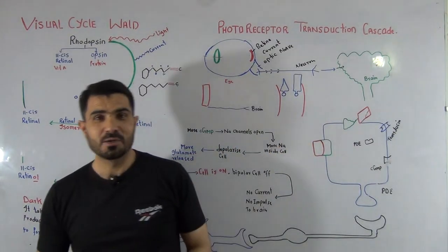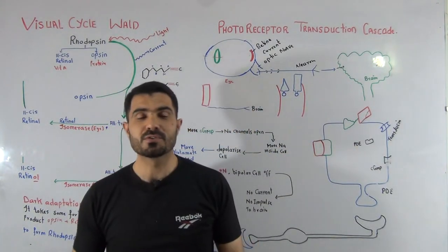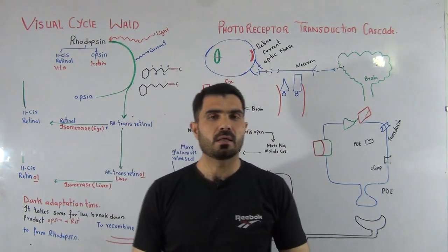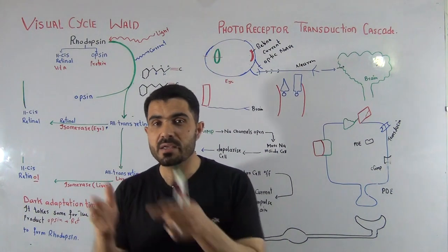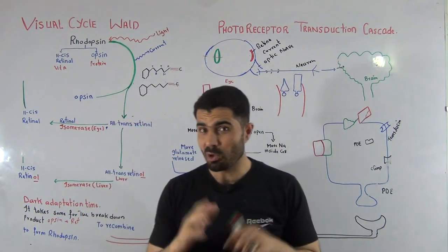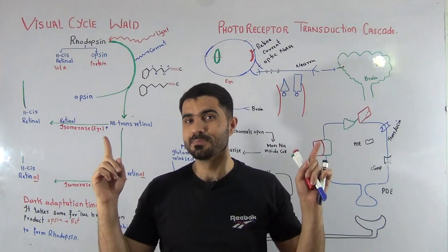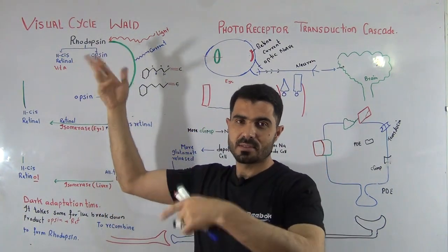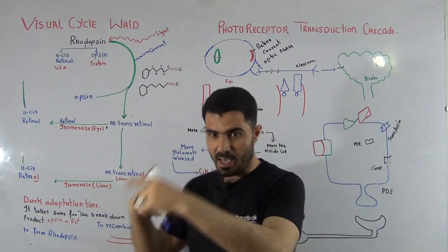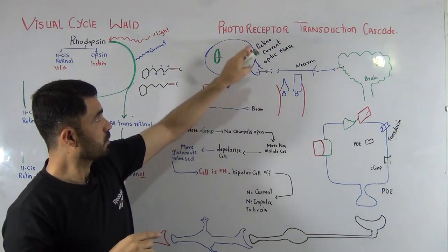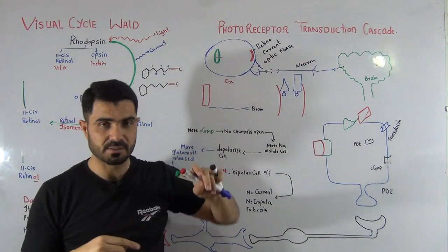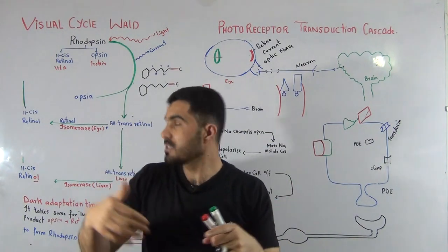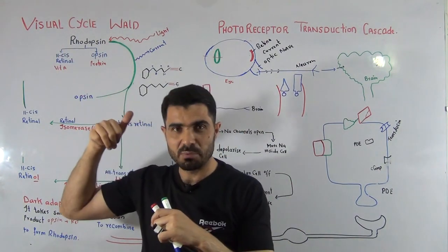Hello guys, welcome back, Assalamu Alaikum. This is your teacher Dr. Hadi. Today we will discuss the role of vitamin A in vision. The topics on the whiteboard are actually two: one is the visual cycle, also called Wald's visual cycle, and the other is the photoreceptor transduction cascade. These will be discussed in two separate video lectures.